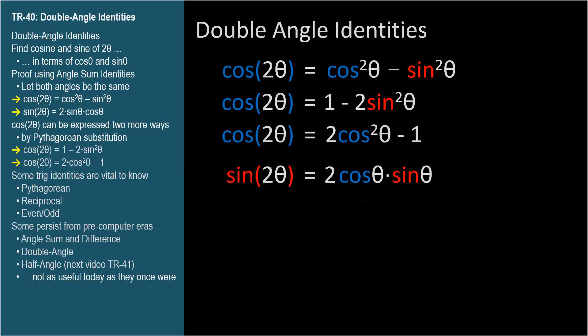Let's let θ equal π over 3 and use these identities to find the cosine and sine of 2θ. Cosine 2θ equals cosine squared θ minus sine squared θ. Since θ equals π over 3,